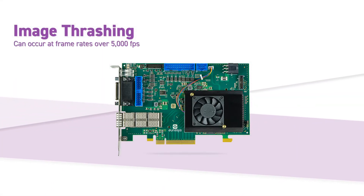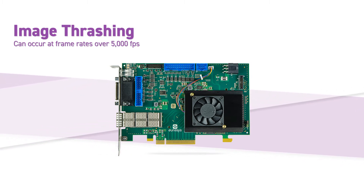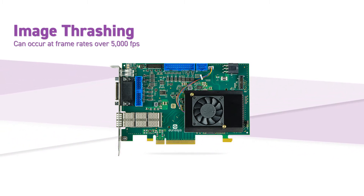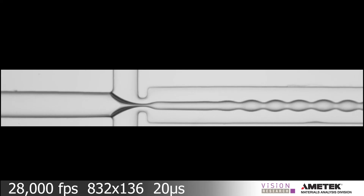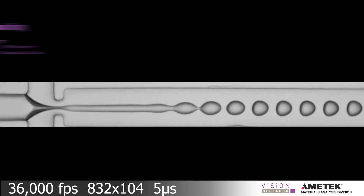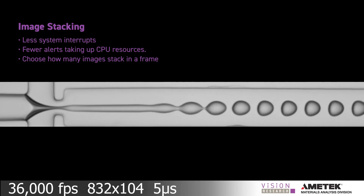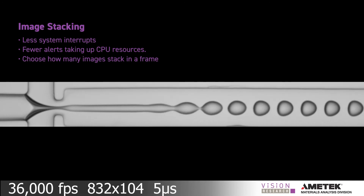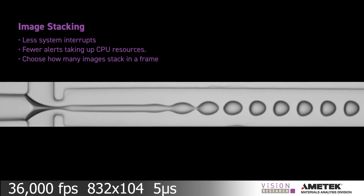The next challenge is image thrashing, which occurs when the volume of incoming frames outpaces the CPU of the host PC. To address thrashing, some frame grabbers can be configured to stack successive images into larger multi-image frames.